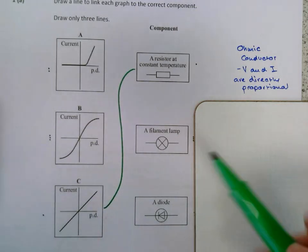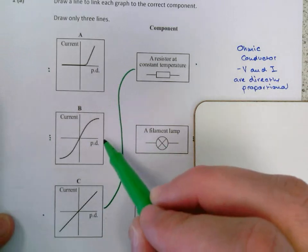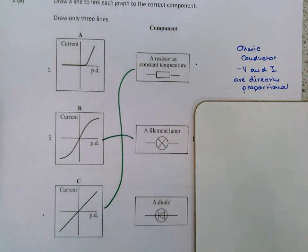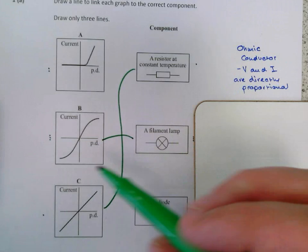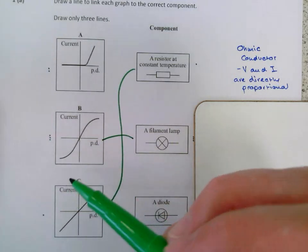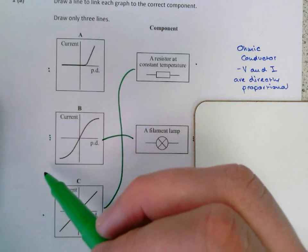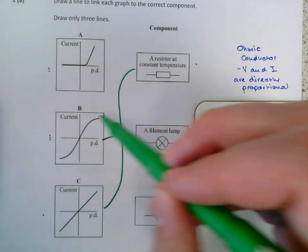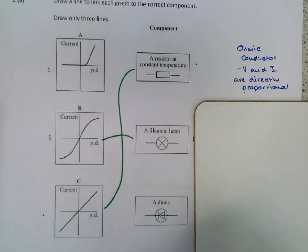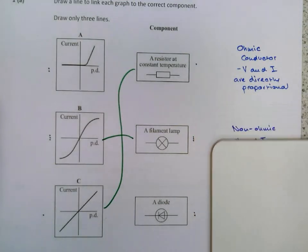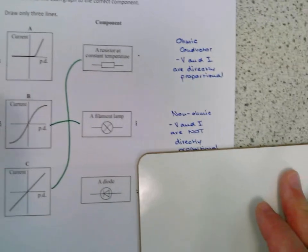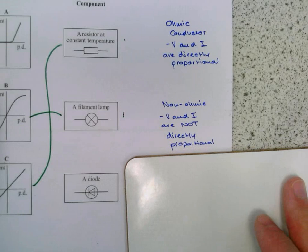The next one we'll look at is a filament lamp. This is a filament lamp here, so you can link those two together. Now, this is not an ohmic conductor. How can you tell? You can tell because it is not a straight line. It does go through the origin, but it's not a straight line. So V and I are not directly proportional. It's not an ohmic conductor.